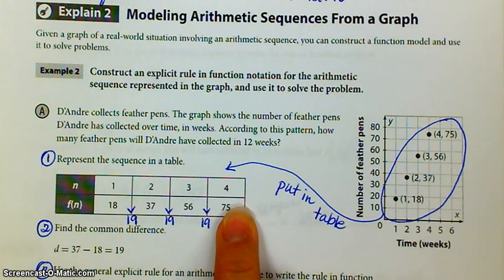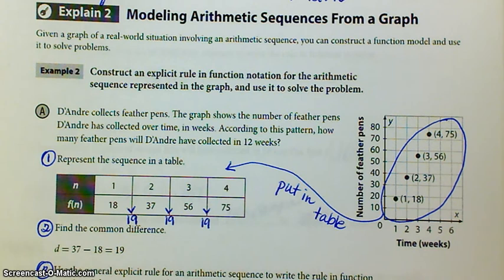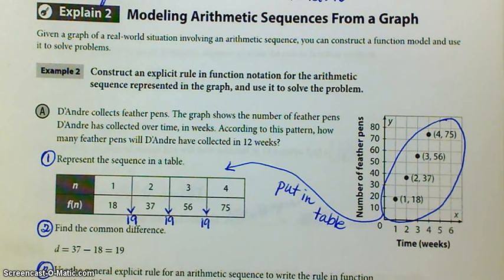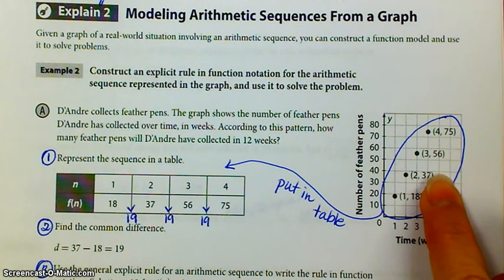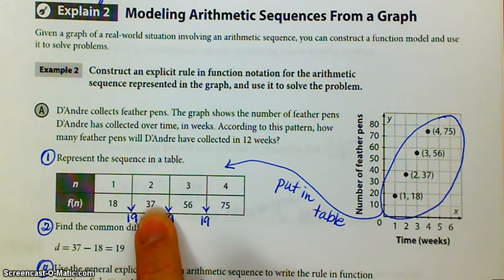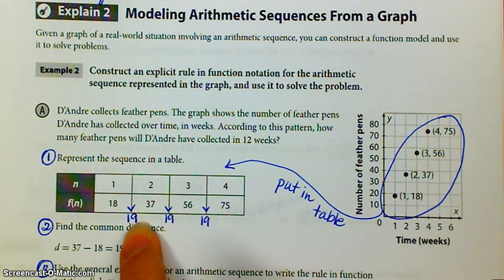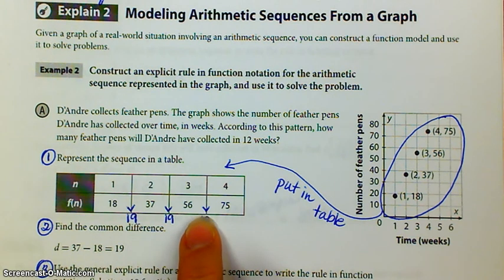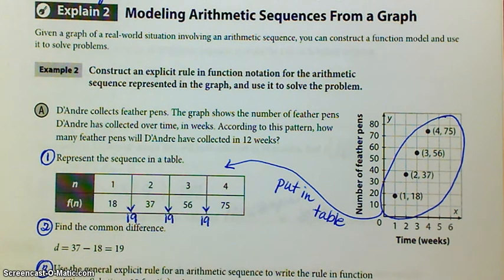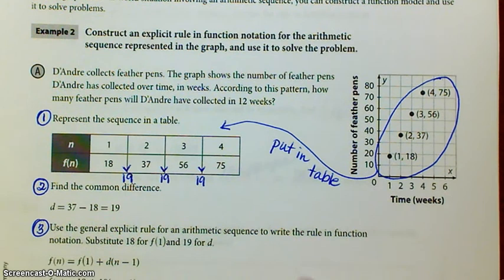So DeAndre collects feather pens. The graph shows the number of feather pens that DeAndre has collected over time in weeks. According to this pattern, how many feather pens will DeAndre have collected in 12 weeks? So you take the information from the graph, put it on the table. I notice that from 18 to 37, that's a difference of 19. So the common difference is 19.